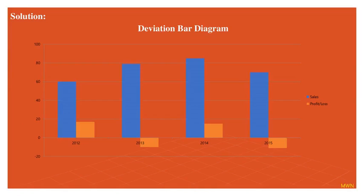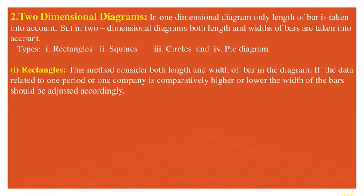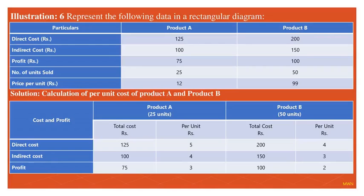Two-dimensional diagrams: here both breadth and height are given importance. There are four types. Let us study them one by one. Rectangles: the height will be the same, but the breadth changes according to the units represented or the time period.